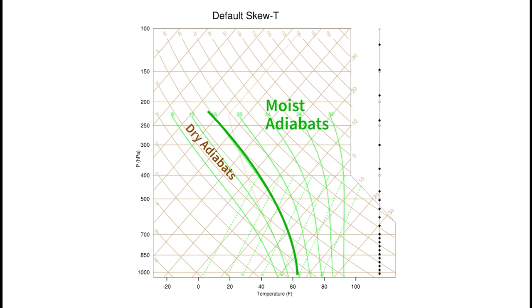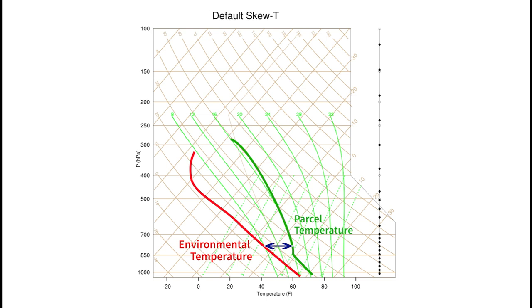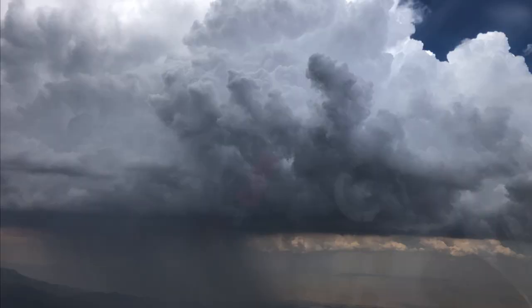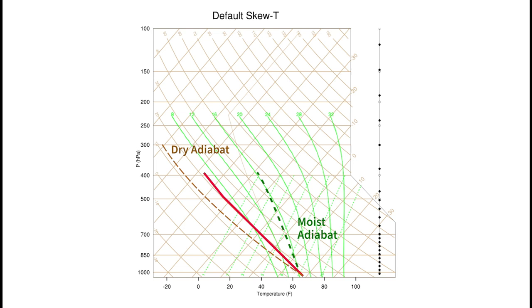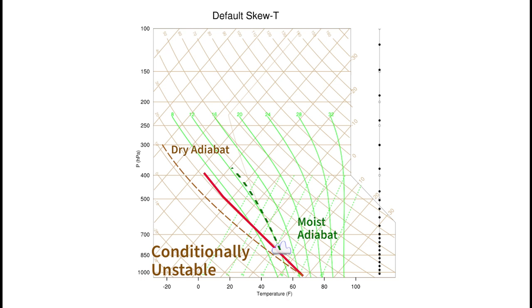If the moist adiabatic lapse rate continues to make the temperature differential within the surrounding air increase, then the cloud will build rapidly and may eventually form a thunderstorm. So what we can learn from this is: if the environmental lapse rate is greater than or leans to the left of the dry adiabat, the atmosphere is unstable. If the environmental lapse rate is between the dry and moist adiabats, it's considered conditionally unstable — when dry it acts stable, but if a cloud forms it can become unstable due to the cooling rate of the moist adiabat. And if the environmental lapse rate is less than or to the right of the moist adiabat, it is absolutely stable.